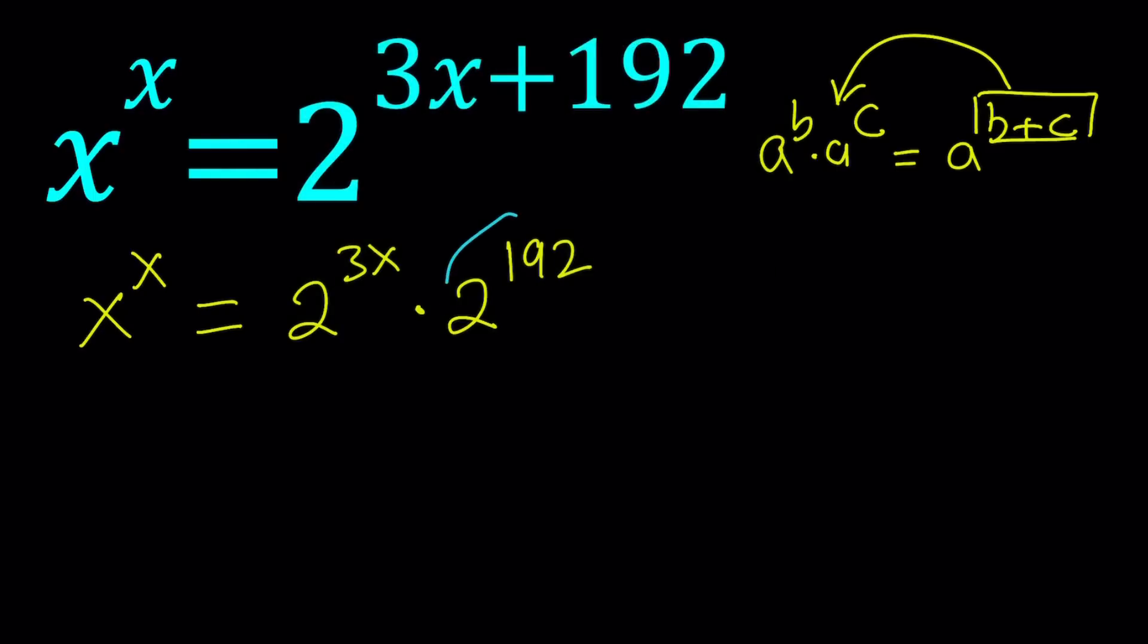So 2 to the power 192 is approximately 6.28 times 10 to the power 57. A number with 58 digits.